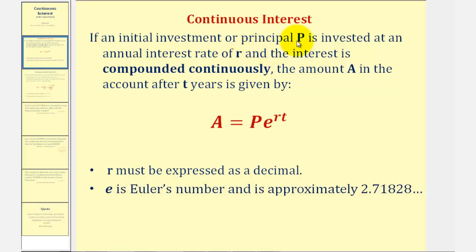If an initial investment or principal P is invested at an annual interest rate R, and the interest is compounded continuously, then the amount A in the account after T years is given by the formula A equals P times E raised to the power of RT. So this is the continuous interest formula.